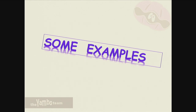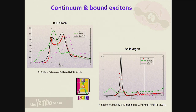Now I will show some examples - these are quite old but still instructive. This is the famous optical spectrum of silicon. You can see: this is RPA, this is GW which shifts the spectrum to higher energy, and then you have a complete renormalization of the intensity of the E1 and E2 peaks only through the Bethe-Salpeter solution. The comparison with experiment is quite good - not perfect because temperature effects have not been taken into account.